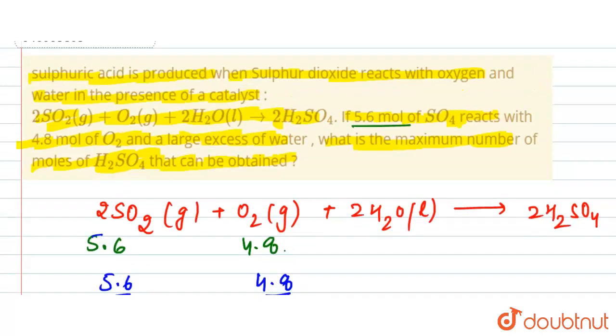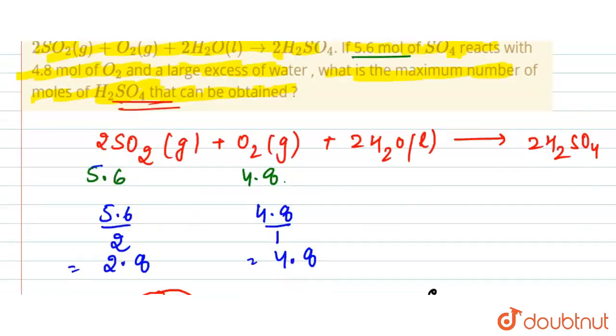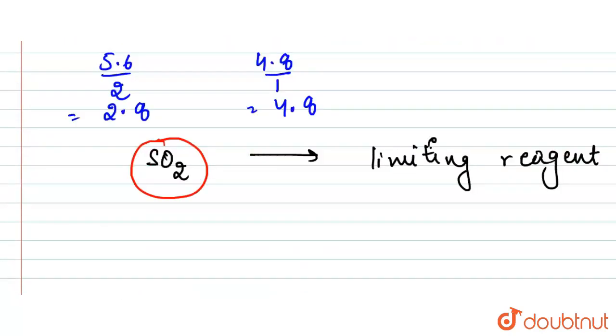So here we can see that 2 moles of SO2 produce 2 moles of H2SO4, right? They are producing 2 moles of H2SO4.